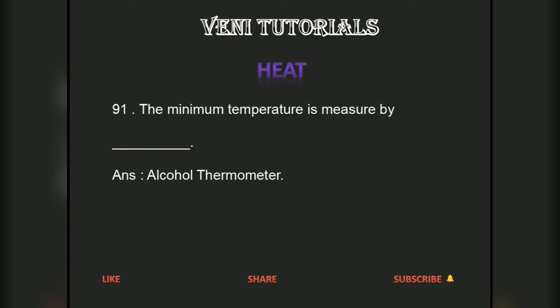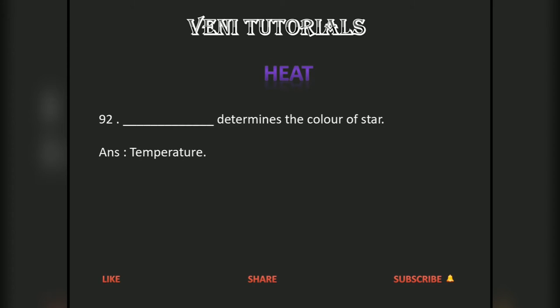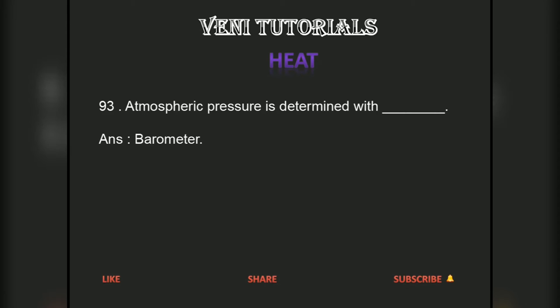The minimum temperature is measured by an alcohol thermometer. Alcohol thermometer also determines the color of a star based on temperature. Atmospheric pressure is determined with a barometer.